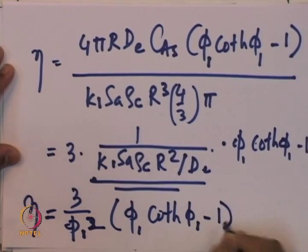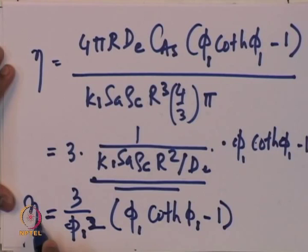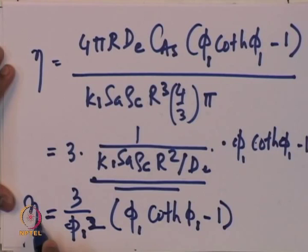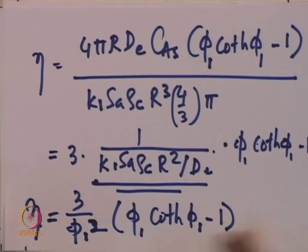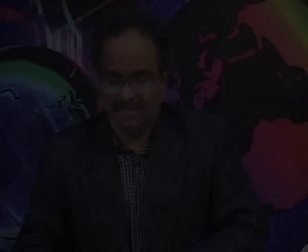There is an inverse relationship between η and φ. As φ increases, η decreases — meaning the catalyst becomes less effective due to stronger pore diffusion limitations. We will continue with this in the next lecture.